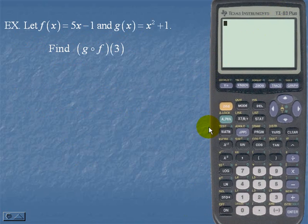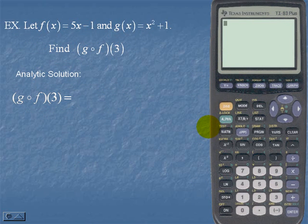Here we will find g circle f of 3. Here's the analytic solution. g circle f of 3, by using our formulas, is the same as g of f of 3.